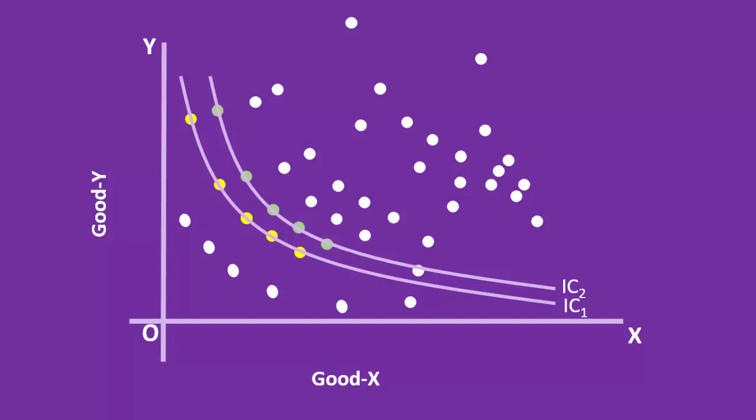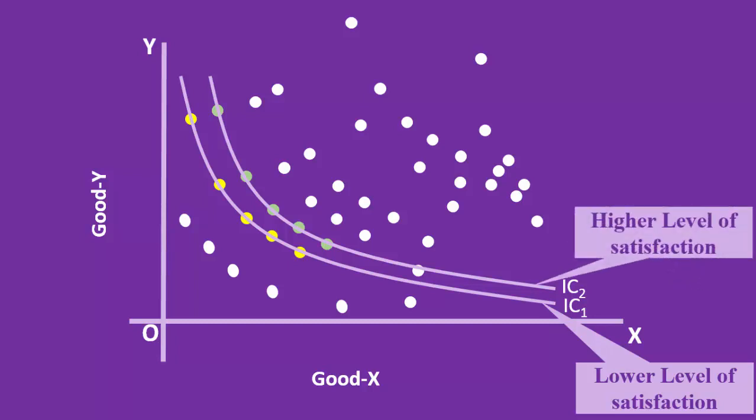Consumer is again indifferent among these combinations. This is the right time to understand the preference hypothesis. Look at the ICs. IC1 represents a lower level of satisfaction. IC2 represents a higher level of satisfaction. But why? We have to find an answer to this question.